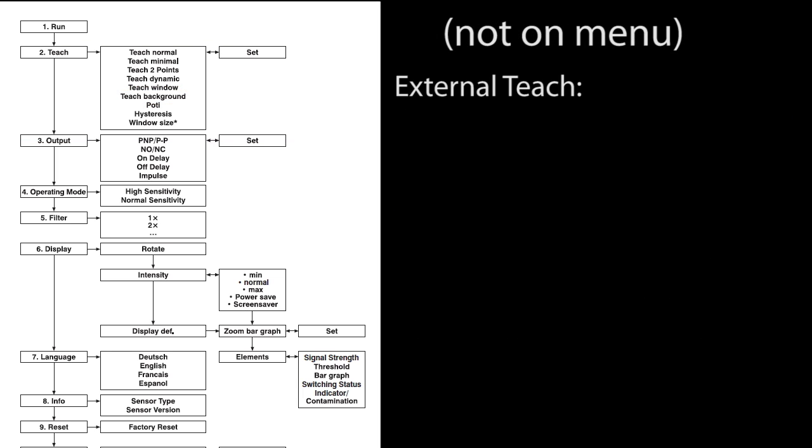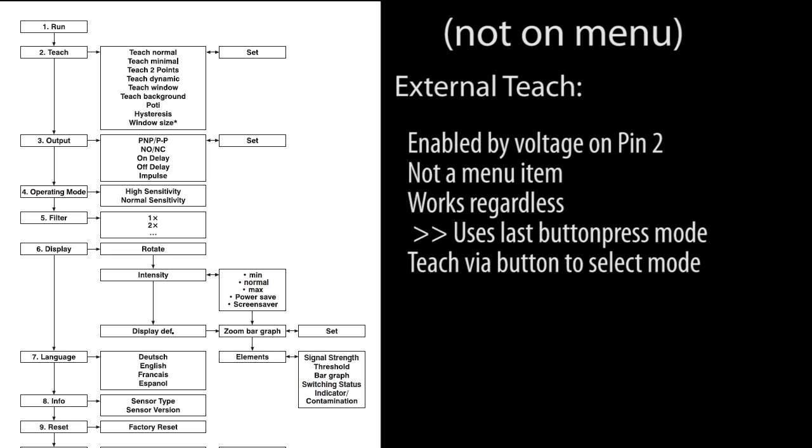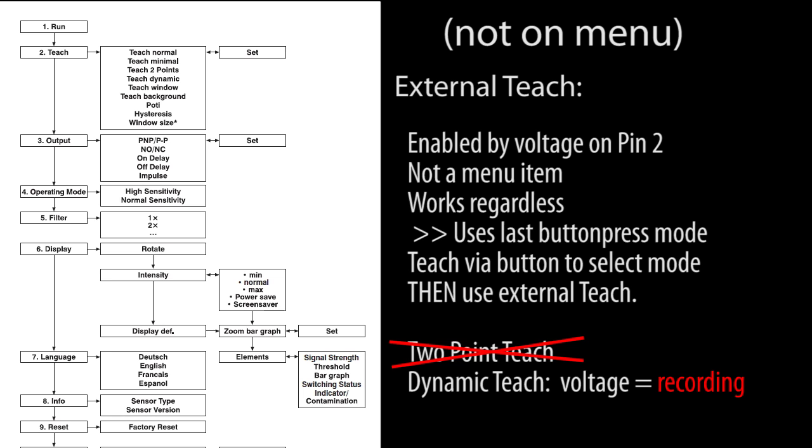External teach does the same thing as we just did but instead of pressing buttons to select thresholds you apply 10 to 30 volts to pin 2. External teach isn't a menu item. When that voltage is applied to the sensor it will reteach a detection threshold as if the sensor was in whatever mode you last taught. So you have to teach a mode via button presses first and then you'll be able to use external teach. Also, you can't do two point teach via external teach and dynamic teach teaches as long as the voltage is applied.